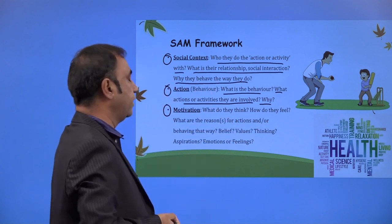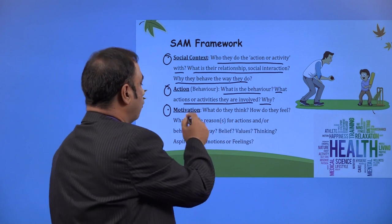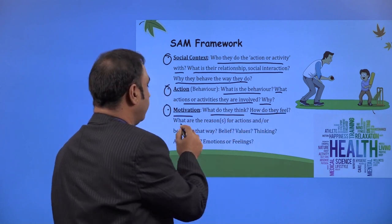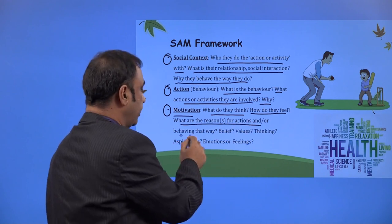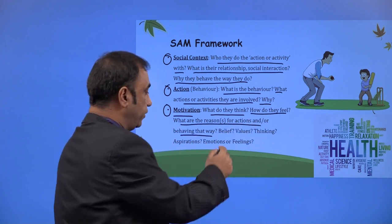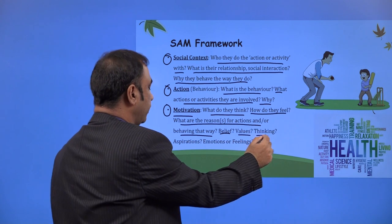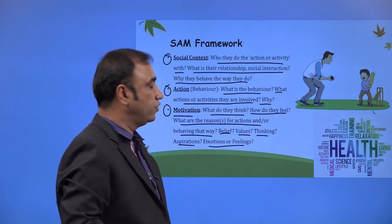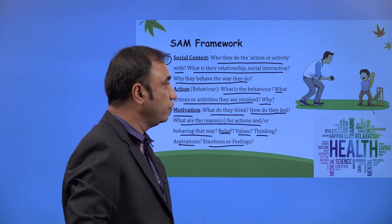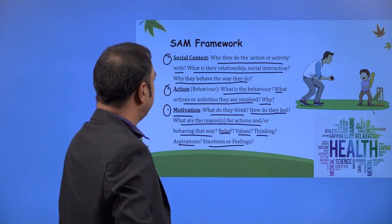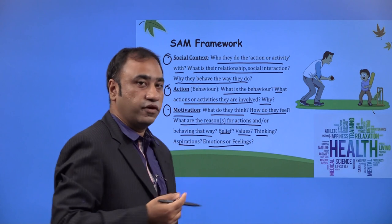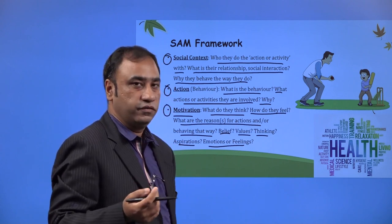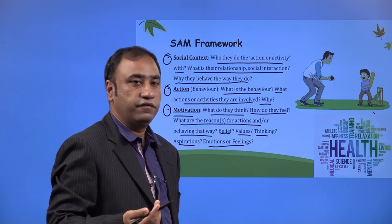You have to study and observe the actions using the framework of SAM: Social context, Action, Motivation. What is their motivation? What do they think? How do they feel? What are the reasons for the actions — behaving that way? Belief, values, thinking, aspirations, emotions, or feelings. These are the frameworks which you can use to understand the observation, and from these observations you can understand your need finding. This framework is applicable for any scenario.